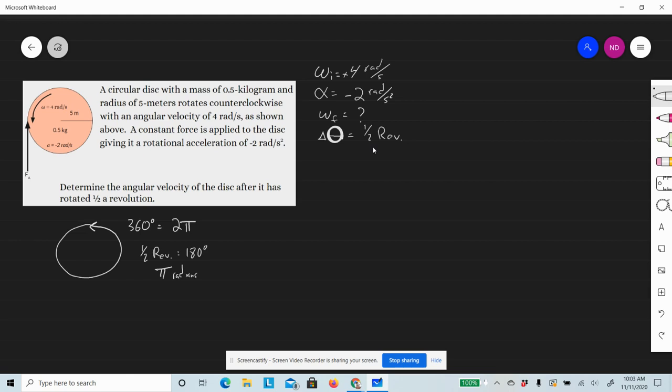Another way to say that is π radians, which is about 3.14 radians. Now, what should we do here? We don't have any time, so we can't use an equation with time in it.